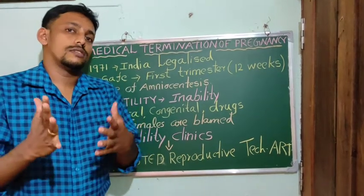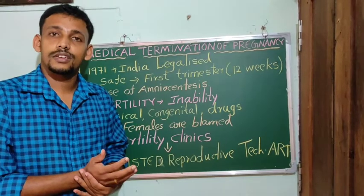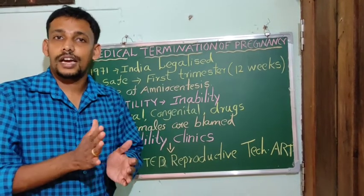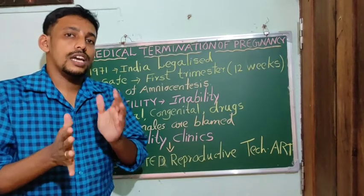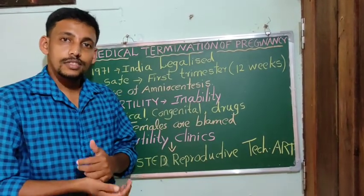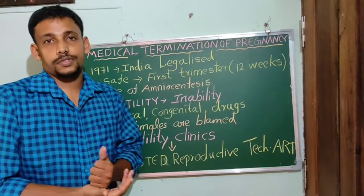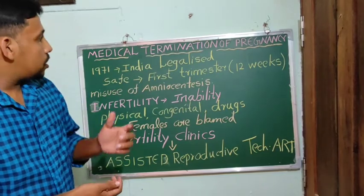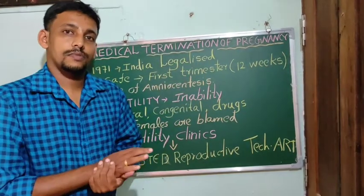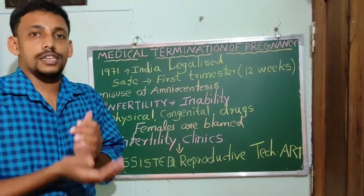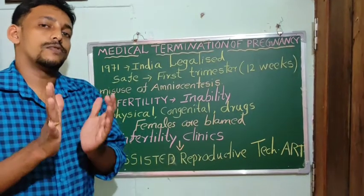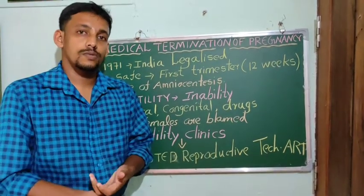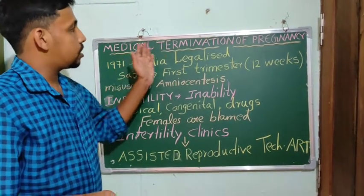Why do we choose MTP or Medical Termination of Pregnancy? To get rid of unwanted pregnancies. These unwanted pregnancies may be due to unprotected sexual intercourse, or failure of various contraceptives, or in cases of rape. In some other cases, continuation of pregnancy may be harmful to the fetus, to the mother, or to both — in such conditions, the doctor may suggest Medical Termination of Pregnancy.